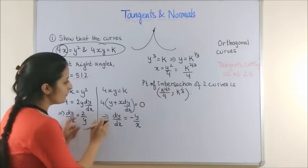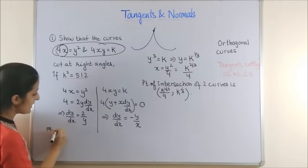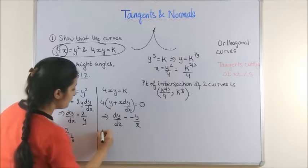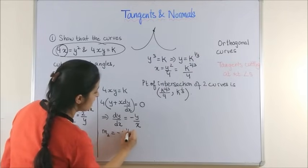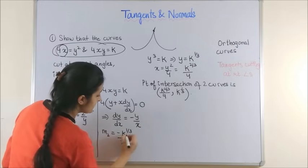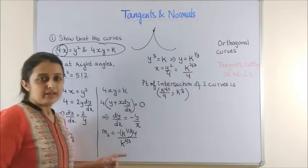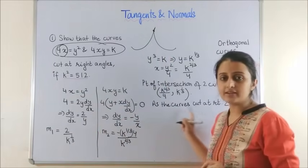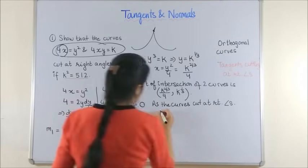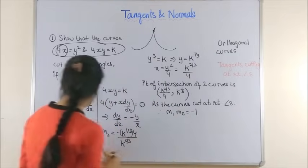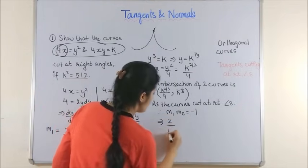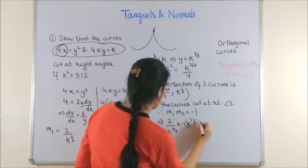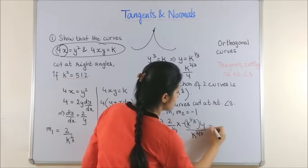Once we have the point of intersection, we substitute to find the slopes. m₁ = 2/k^(1/3) from the first curve. m₂ = −k^(1/3) · 4 / k^(2/3) from the second curve. It's recommended not to simplify yet, as it will be taken care of as we proceed. Since the curves are orthogonal, m₁ · m₂ = −1. Substituting: (2/k^(1/3)) · (−k^(1/3) · 4/k^(2/3)) = −1.